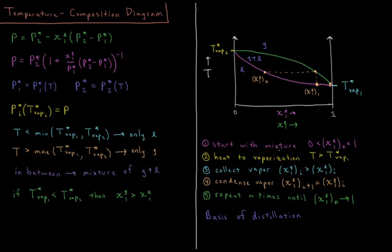We're going to start with a mixture of two liquids where the mole fraction of liquid 1 is some non-zero and non-one value — for example, as drawn here, χ1 is about 0.3, or about 30% liquid component 1. We're going to heat to about the vaporization temperature, so a temperature greater than the boiling point of pure liquid 1, and collect the vapor that results. At this temperature, the mole fraction in the liquid is about 0.3 but the mole fraction in the vapor is about 0.85.